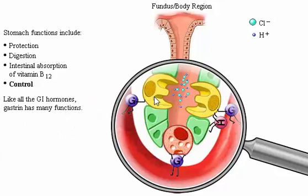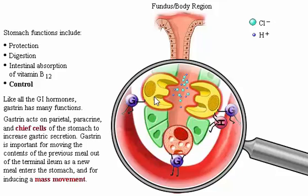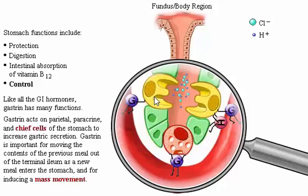Like all GI hormones, gastrin has many functions. In general, gastrin promotes gastric motility and secretion and exerts a trophic effect on the stomach. Gastrin acts on parietal, paracrine, and chief cells of the stomach to increase gastric secretion.